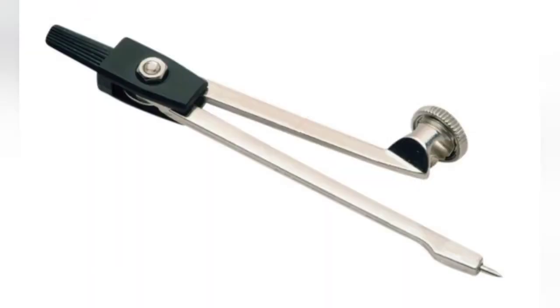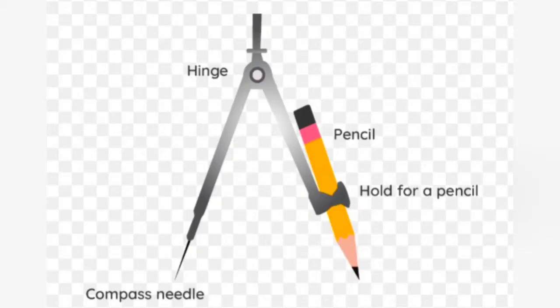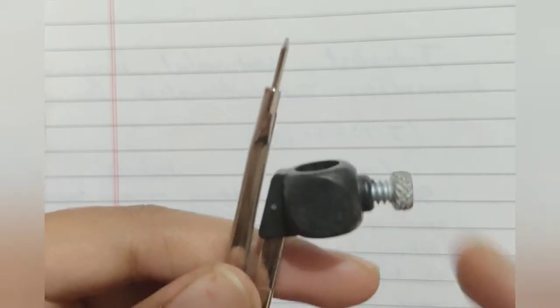First of all, let me introduce you this instrument that is known as compass. We will use this compass to make a circle. In this picture, you can see different parts of a compass. This one is a compass needle, this is hinge, this is pencil and this is hold for a pencil. This is your compass, this is a pencil.